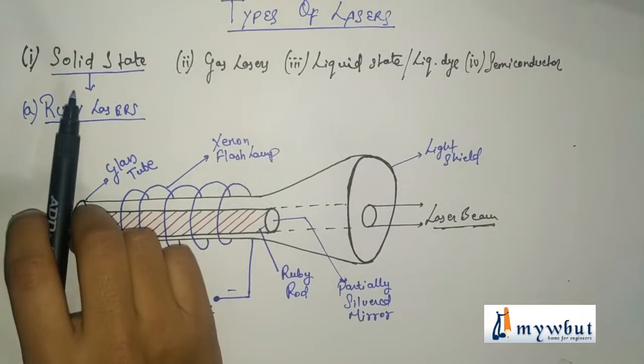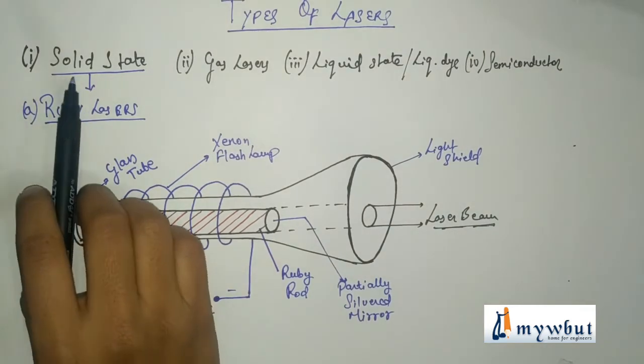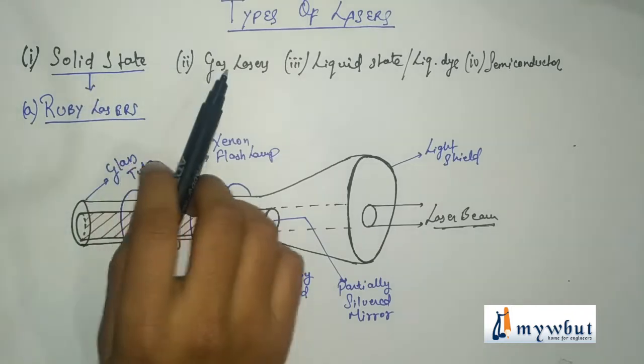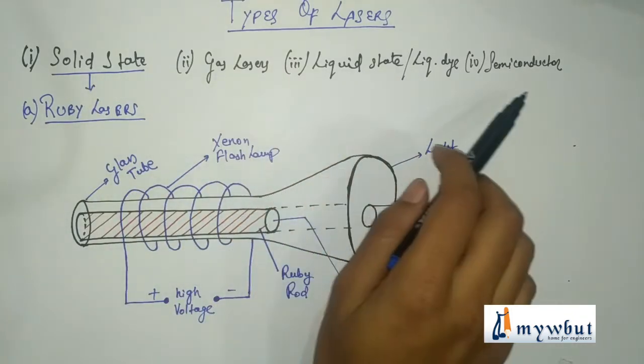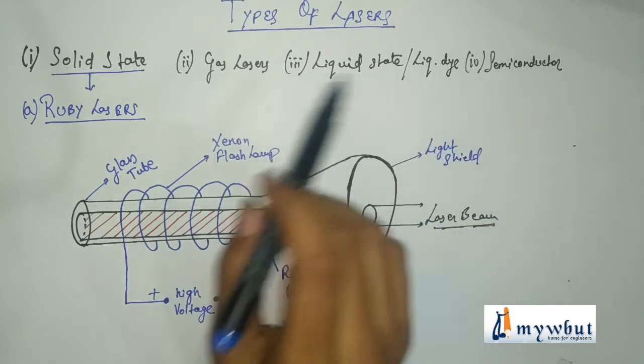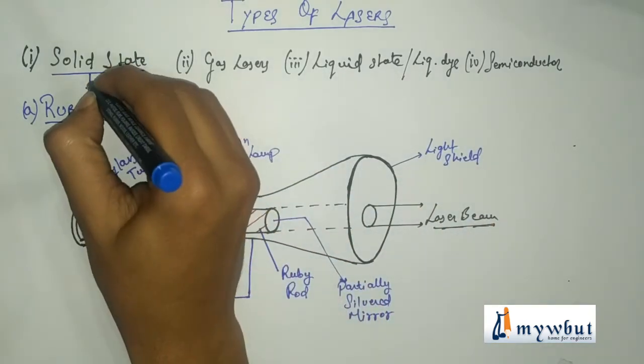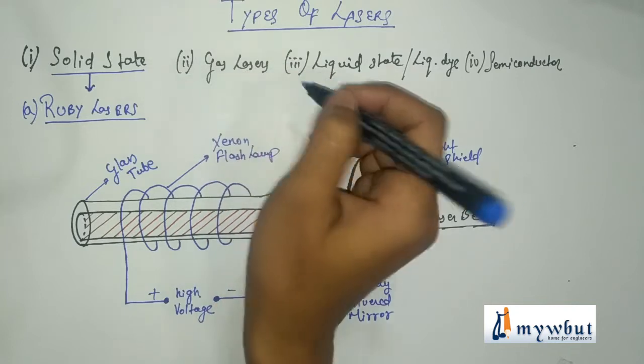First, let us see the types of lasers. Those are solid state lasers, gas lasers, liquid state or liquid dye lasers, and semiconductor lasers. In our syllabus, we only have solid state lasers and gas state lasers.